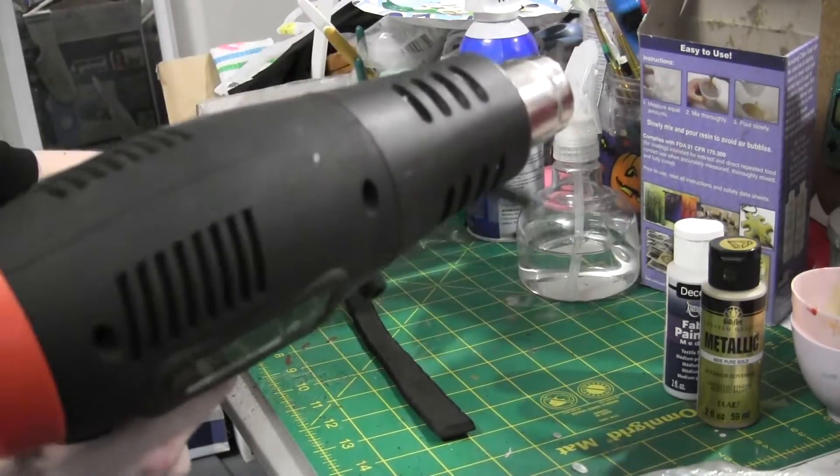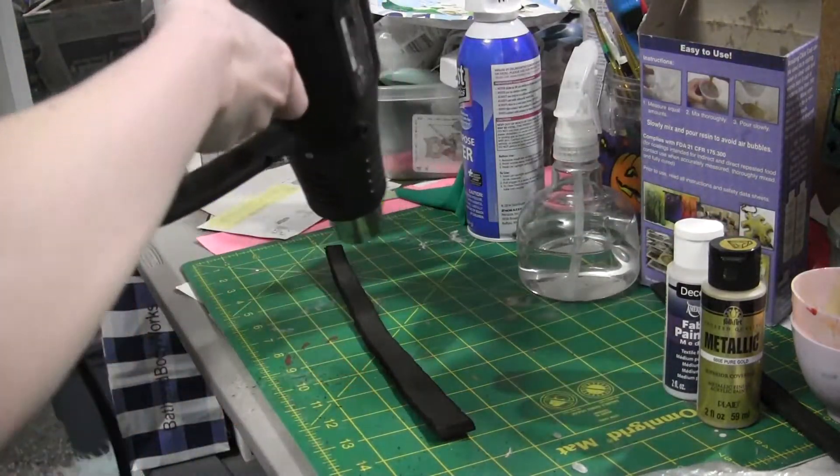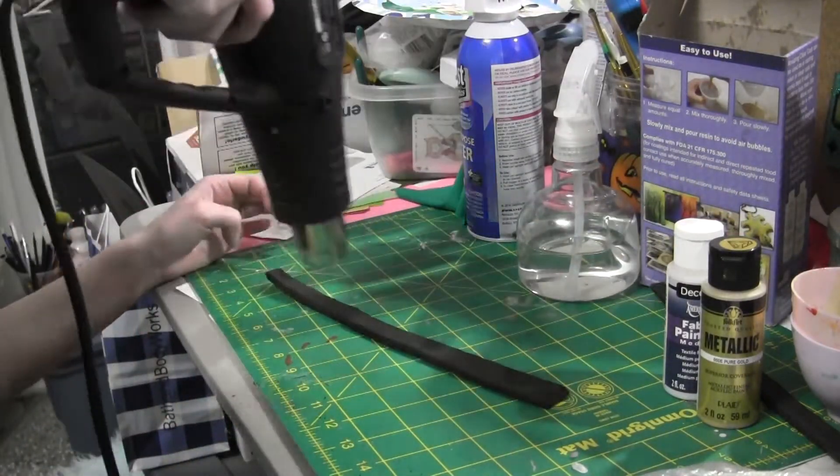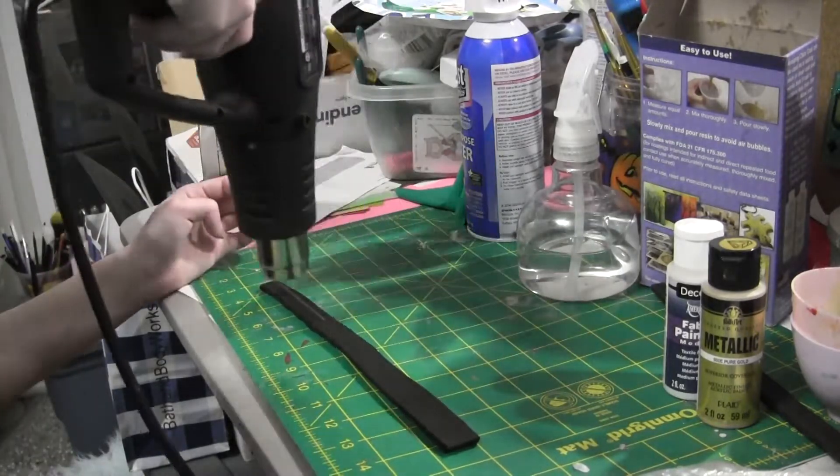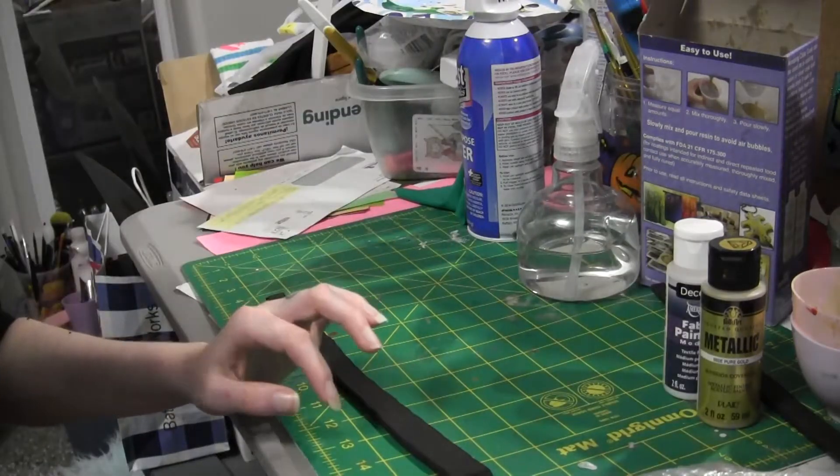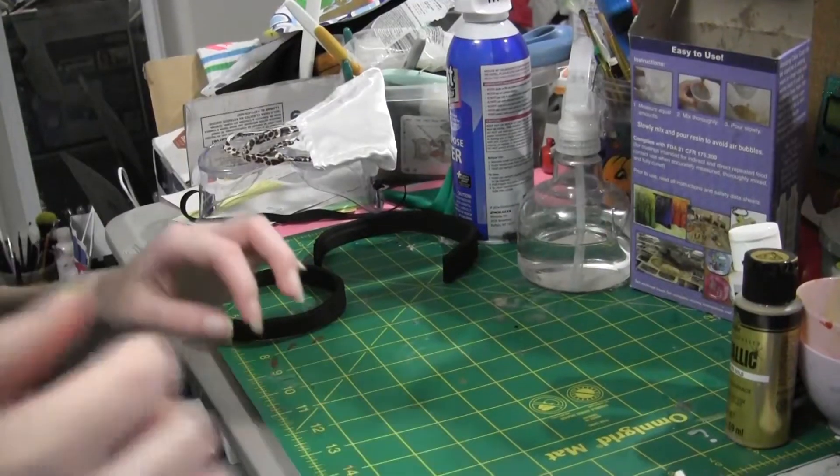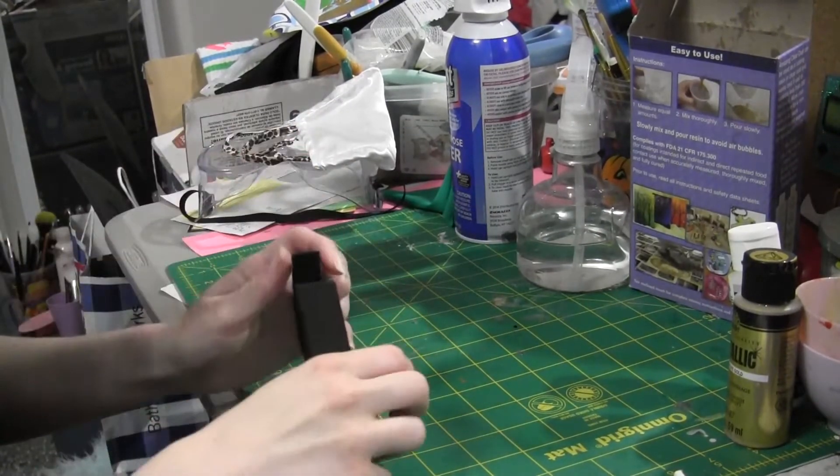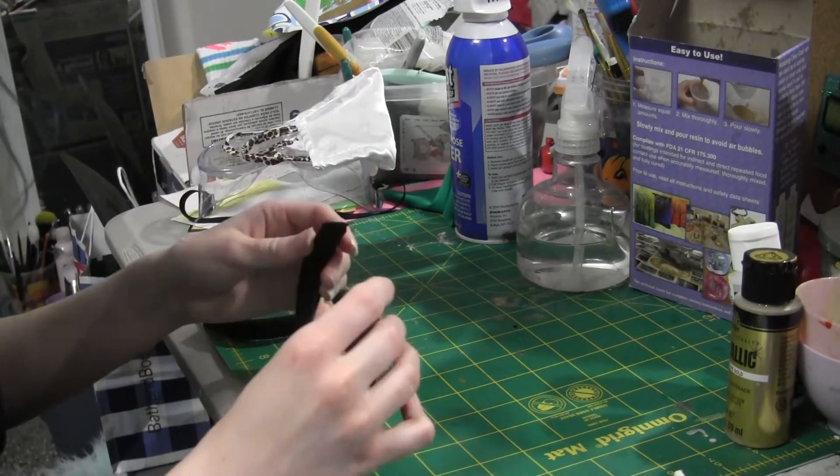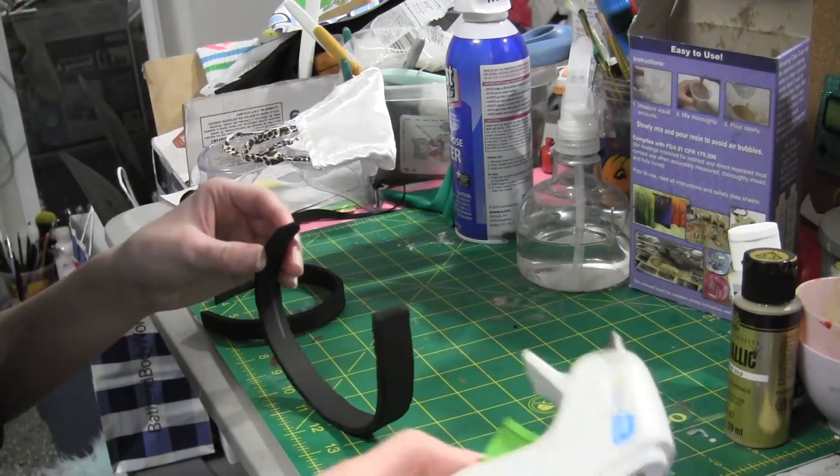So I'm using my heat gun to heat them up. I start with the lower setting to just seal it, I guess. And then I use the higher setting, and I just bend them into shape. And then I use my hot glue gun and I glue them closed.